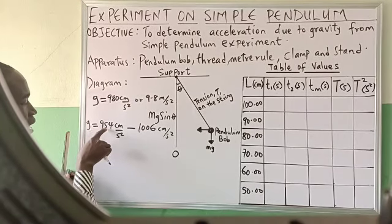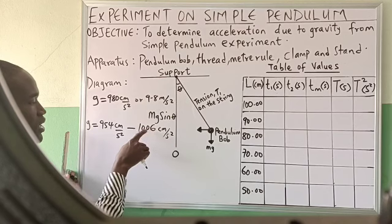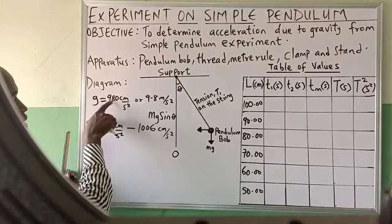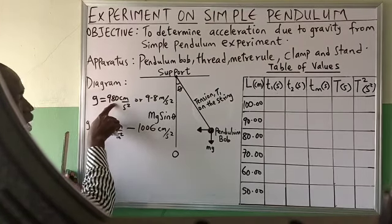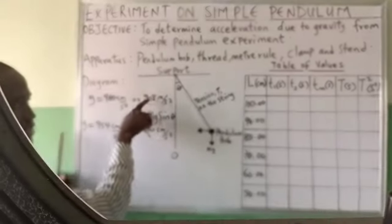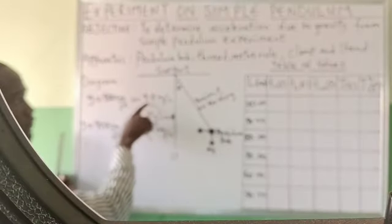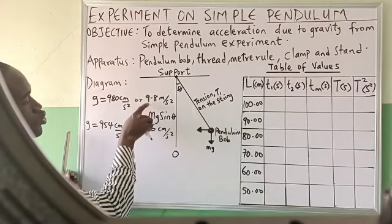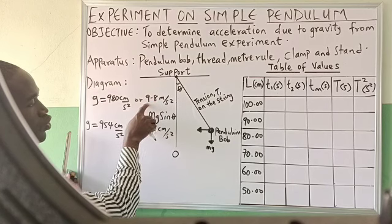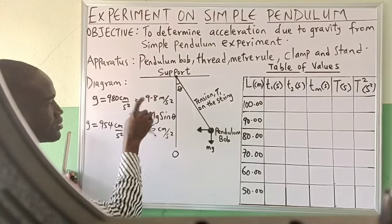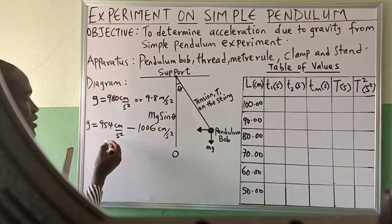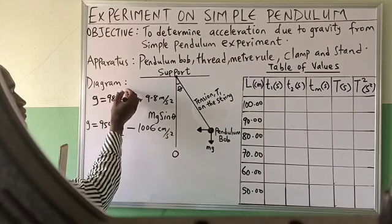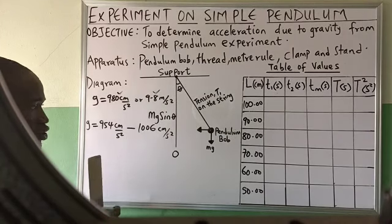If you approximate 954 to the nearest hundred you get 1000, and if you approximate 1006 to the nearest hundred it also gives you 1000. In meters per second squared, if you approximate to the nearest whole number, it gives you 10 m per second squared. This is the range of values for acceleration due to gravity.